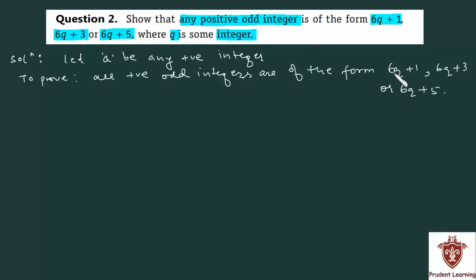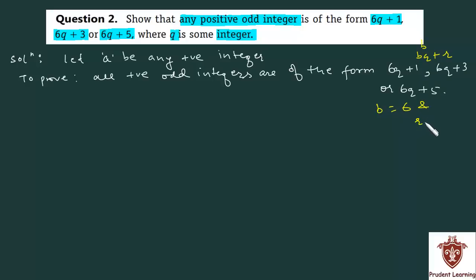Now 6q plus 1, 6q plus 3, or 6q plus 5 are of the form bq plus r, where b is equal to 6 and r is equal to 1, 3, and 5.